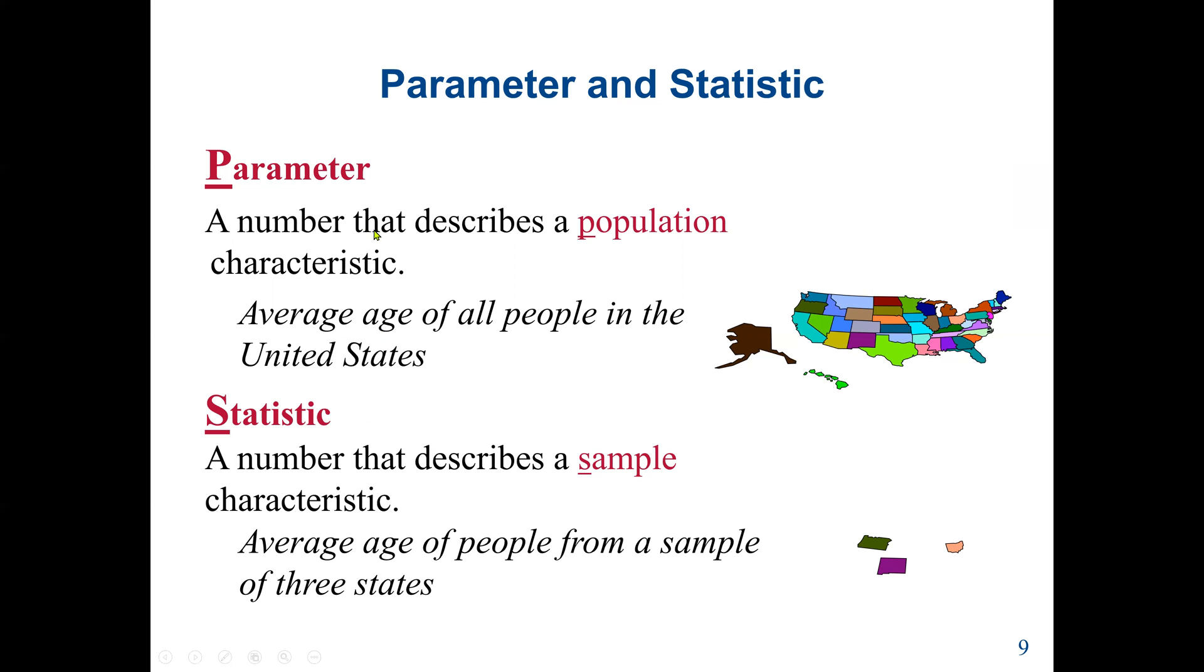So first parameter, the whole population, average age of all the people in the United States. I'll take a sample, the United States have 51 states, I'll take only three states out of the whole states in the United States. That will be called a sample.